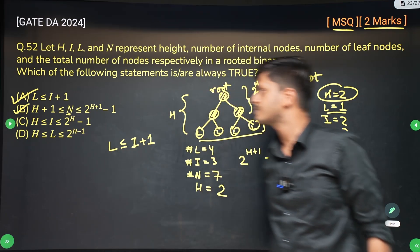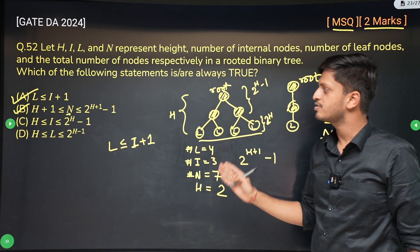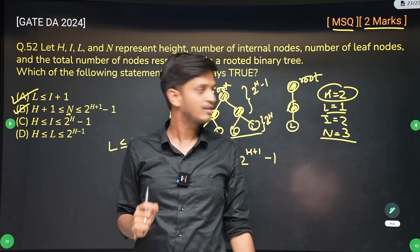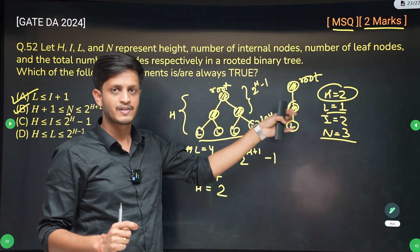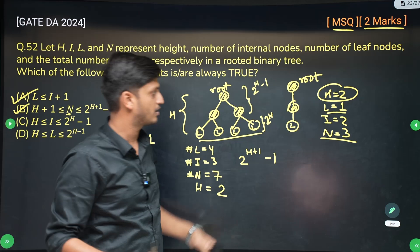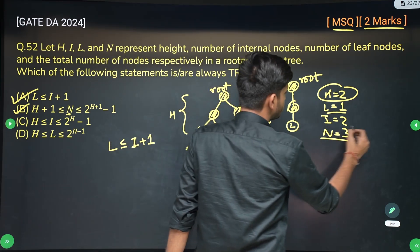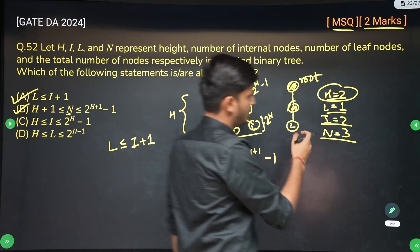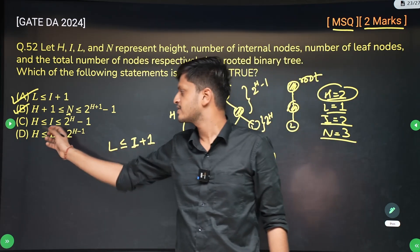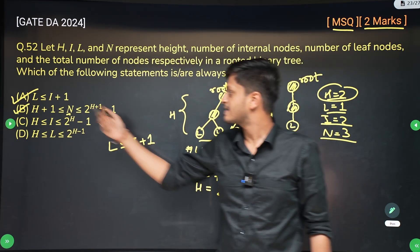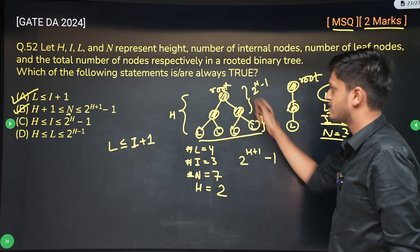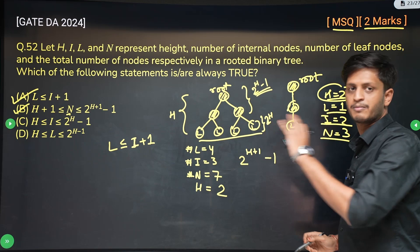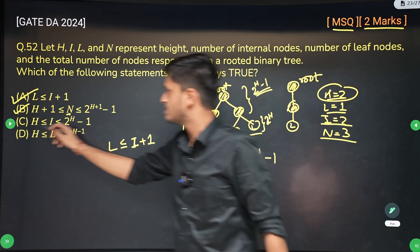Option C says the number of internal nodes is at least h. The minimum number of internal nodes occurs when the tree is just a chain, where the number of internal nodes equals the height. So i is always greater than or equal to h. The maximum is 2^h minus 1 in the complete tree. Option C is also correct.